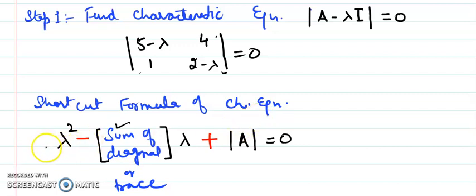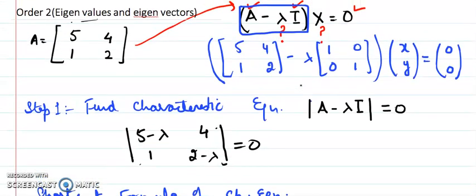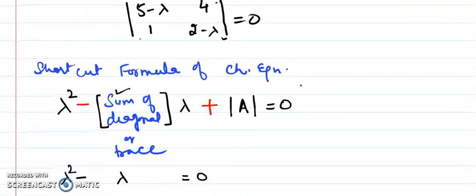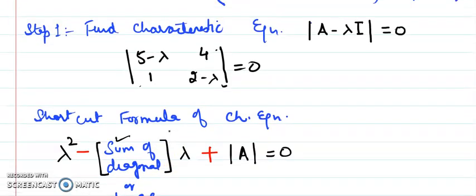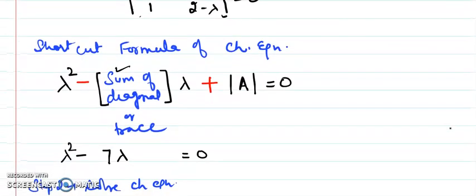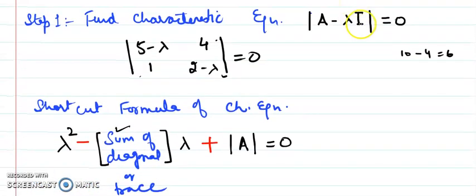First term lambda square is positive, then minus times sum of the diagonal is lambda coefficient plus times determinant. If you see the question, if I see directly, what is diagonal sum, 5 plus 2 is 7, so here I will get a 7 and when I see what is the determinant of this matrix, 5, 2 is 10, 10 minus 4 is 6. So I got determinant value comes out to be here, it is a determinant value.